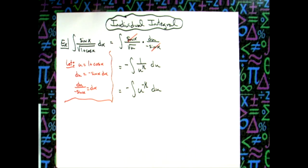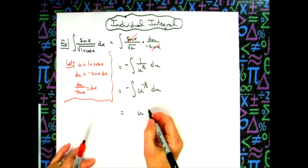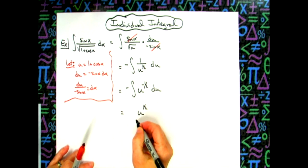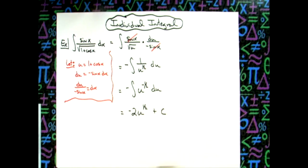At this point, I'll be able to add 1 to that exponent to do my integration. That's going to give us u raised to the 1 half, and in front we'll have negative 2 plus c because the integration is done.